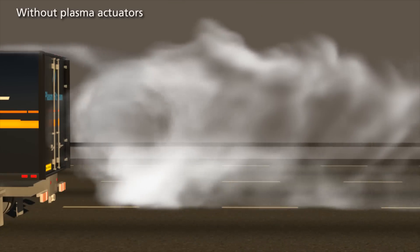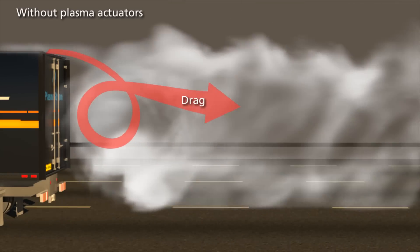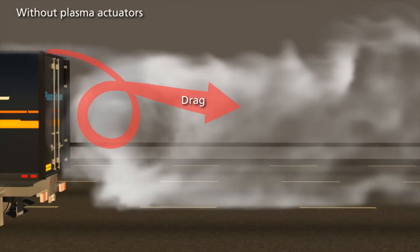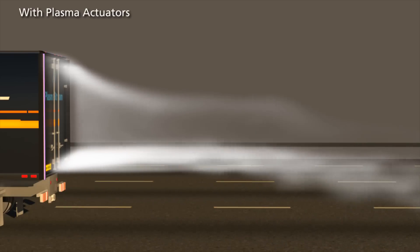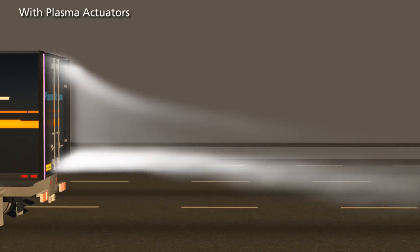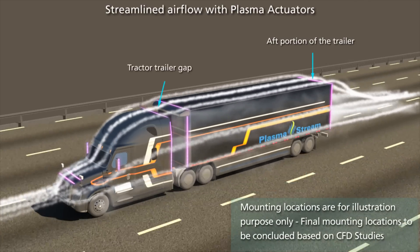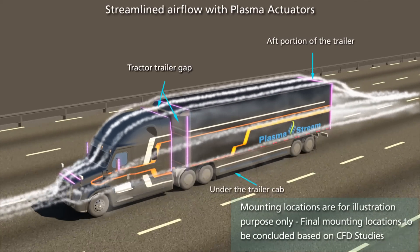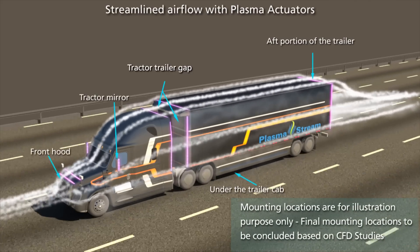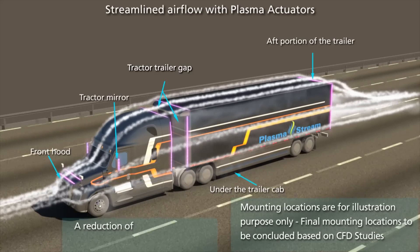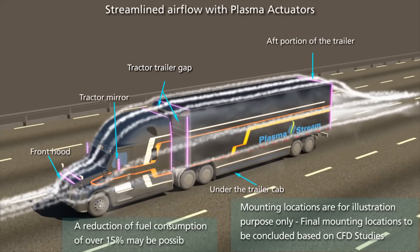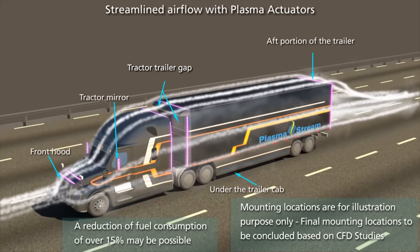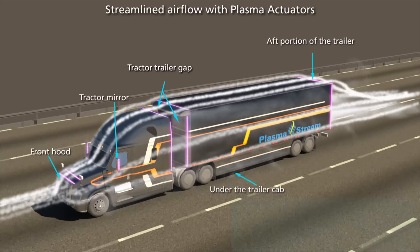The plasma actuators will not only streamline the aerodynamics to improve fuel economy, but also help to overcome the disadvantages of the bulky, passive aerodynamic solutions currently available in the market. PlasmaStream's technology can be installed at various strategic locations around a semi-truck to streamline the aerodynamics. PlasmaStream believes that a reduction of fuel consumption of over 15% may be possible, which would lead to staggering savings for fleets and owner-operators around the world.